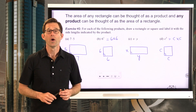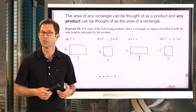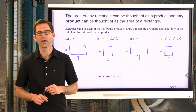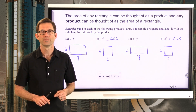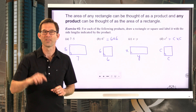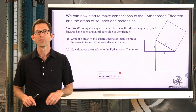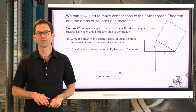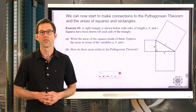We can find the area of any rectangle or any square using a product, and any product could be thought of as the area of a rectangle or a square. Now let's make that bridge to the Pythagorean theorem. We can now start to make connections to the Pythagorean theorem and the areas of squares and rectangles. Let's take a look at exercise 3.